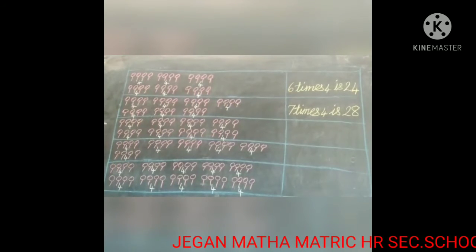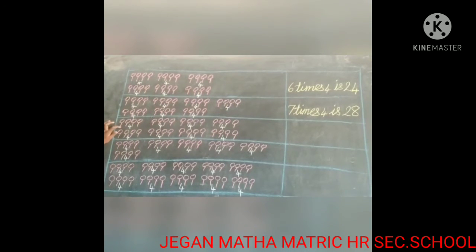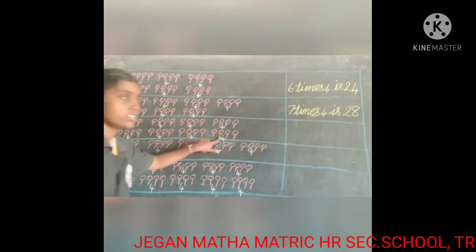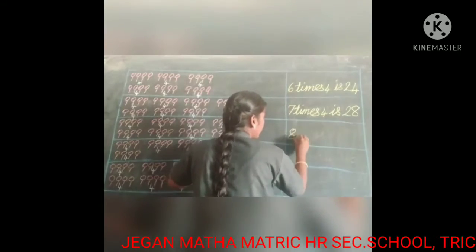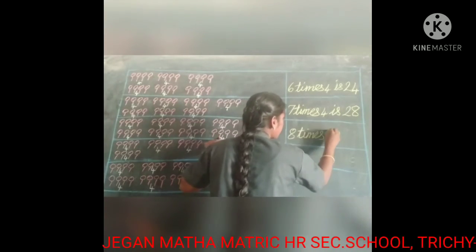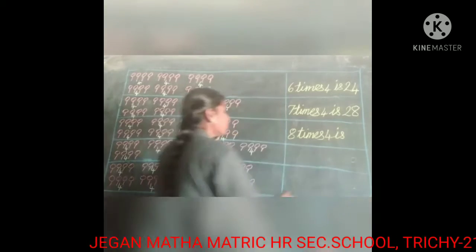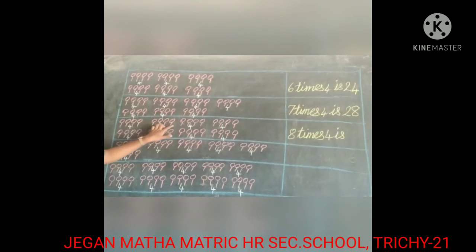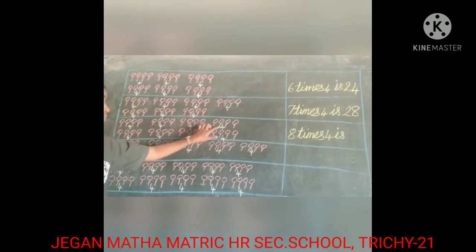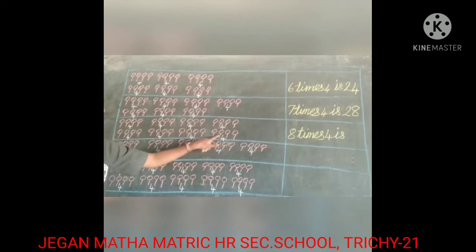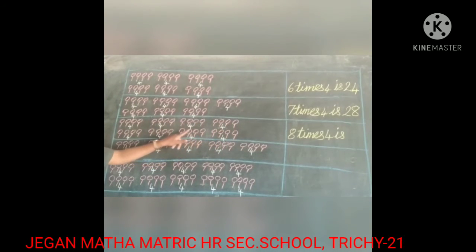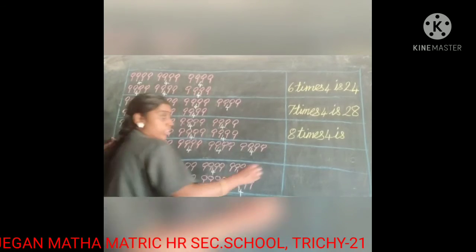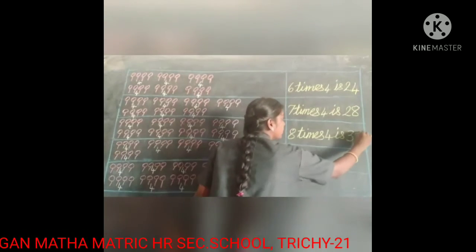Now look at the next box. Count how many 4's are there: 1, 2, 3, 4, 5, 6, 7, 8 — eight times. So write it here: 8 times 4 is... Count all the lollipops: 1, 2, 3, 4, 5, 6, 7, 8, 9, 10, 11, 12, 13, 14, 15, 16, 17, 18, 19, 20, 21, 22, 23, 24, 25, 26, 27, 28, 29, 30, 31, 32. So 8 times 4 is 32.